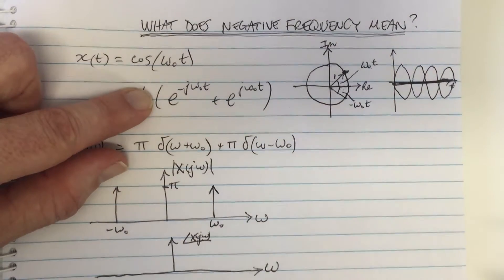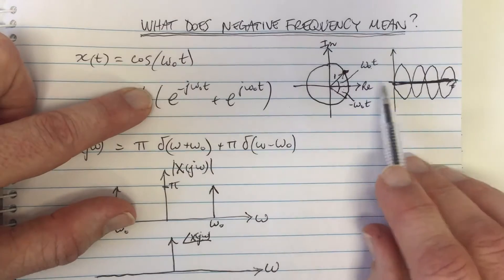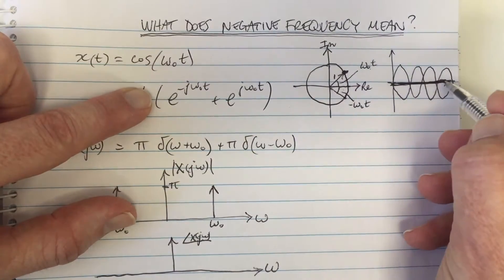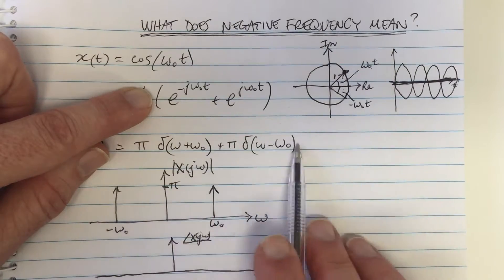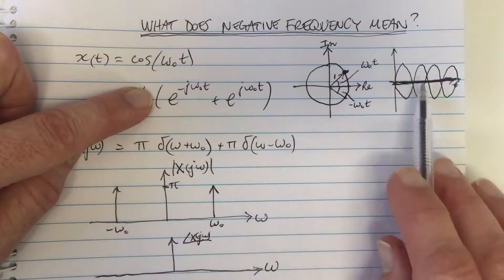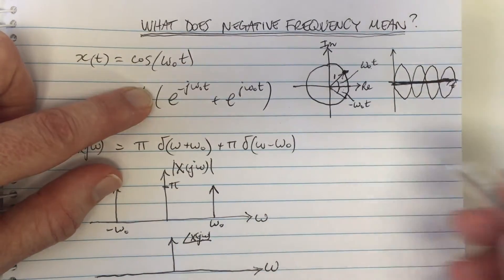Now, for the imaginary component, we are adding these two components together. And when we add these two, they exactly cancel. And the result is zero. Hopefully, I think you can see that. So this is in the imaginary component. It's zero. And that's what is down here showing that this is real. The Fourier transform is only real. There's no imaginary component.